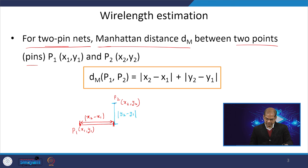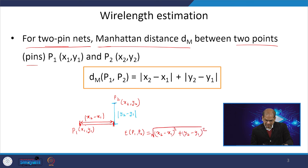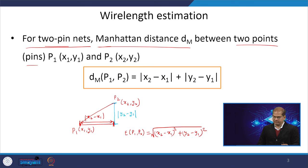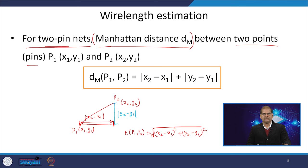The Euclidean distance E(p1, p2) is the square root of (x2 - x1)² + (y2 - y1)², which is the diagonal. However, we cannot place a diagonal metal in VLSI, hence we always use Manhattan distance whenever we are doing VLSI placement. This is the methodology for wire length estimation in VLSI routing.